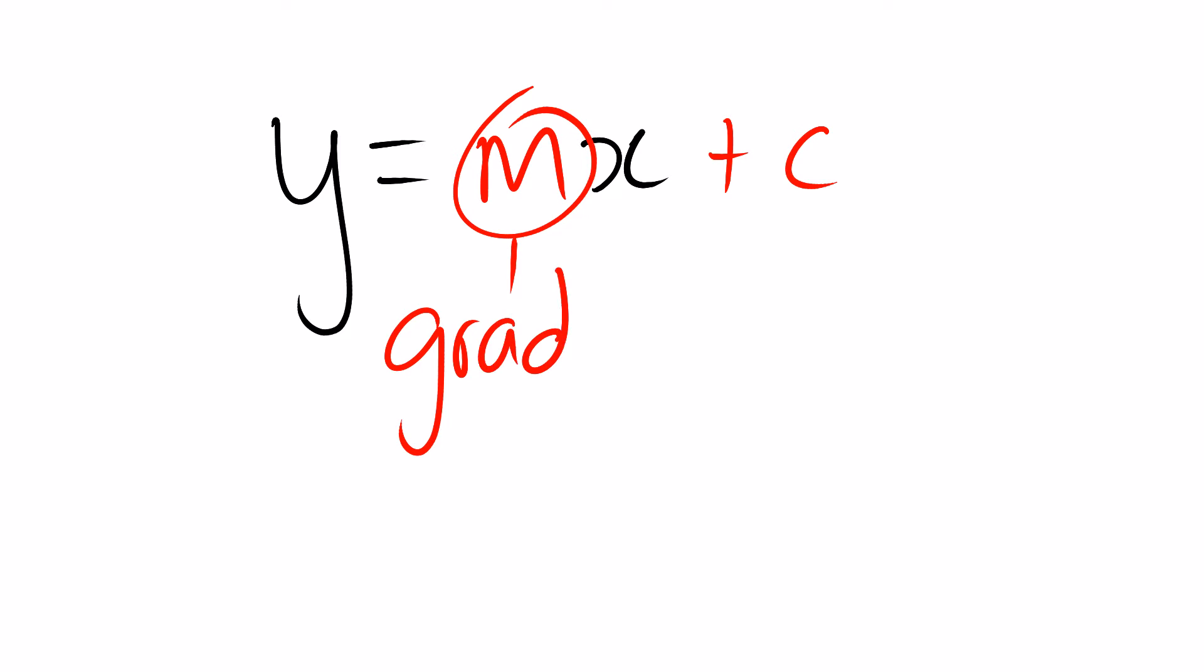So quickly to run through what we've already run through in class. When we're dealing with a linear equation or the equation of a straight line, we look at that equation in y-intercept form. So we have y equals mx plus c, where m is the gradient of the line and c is the y value of the y-intercept.